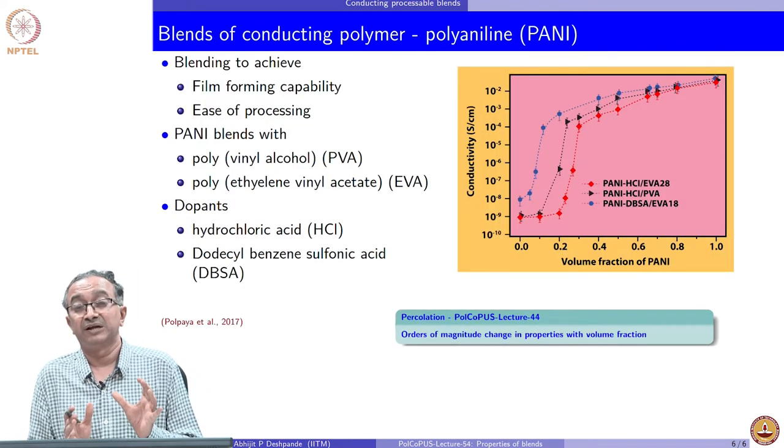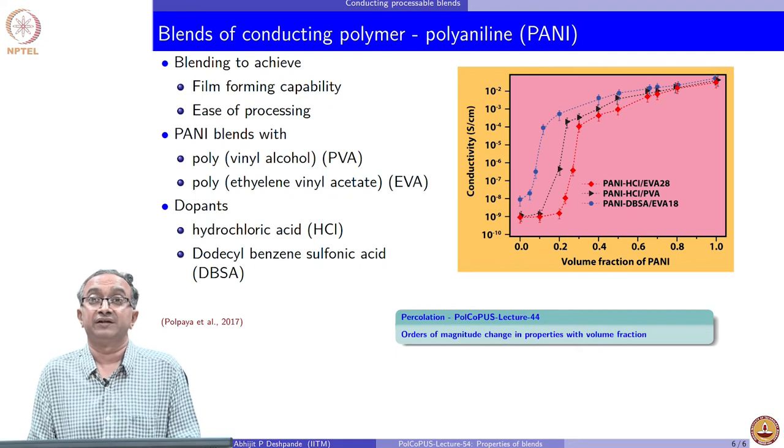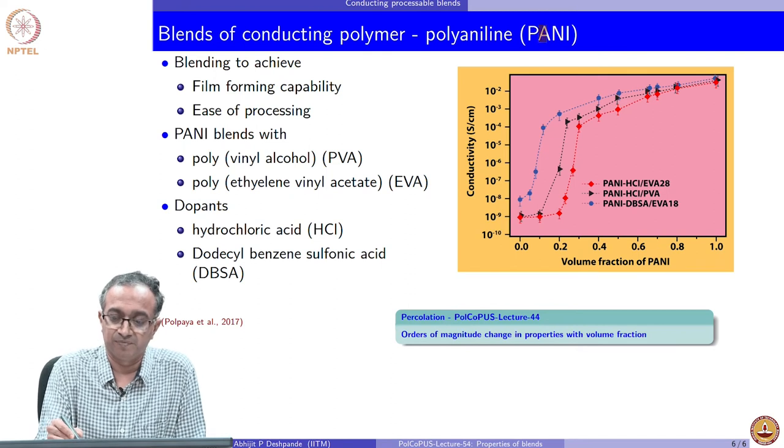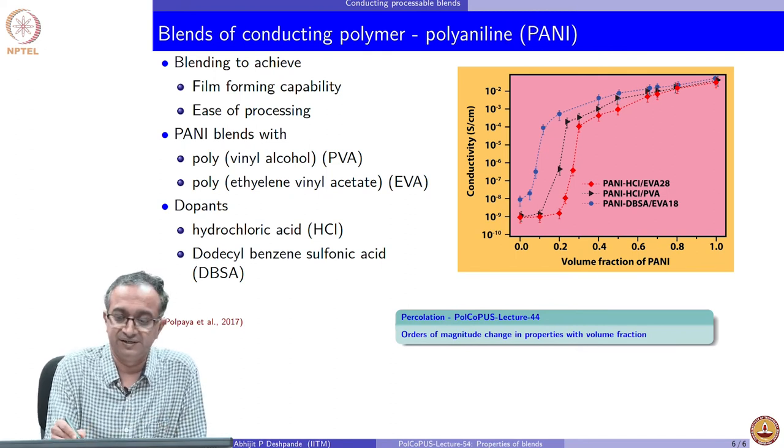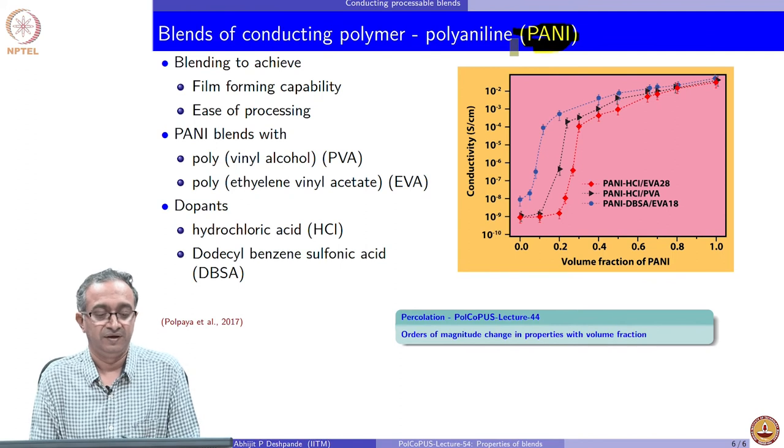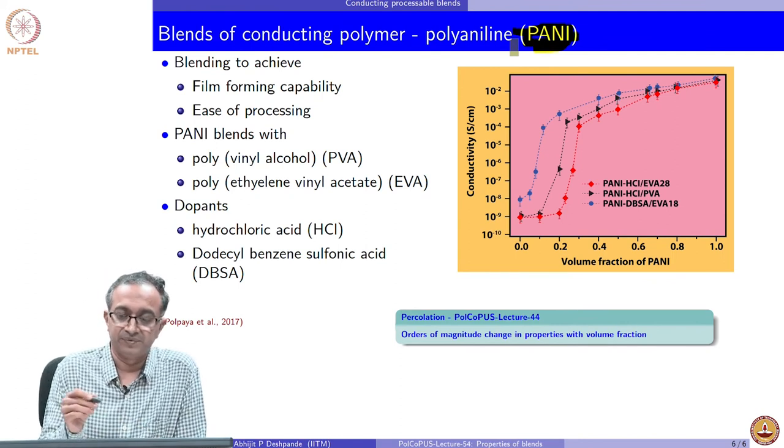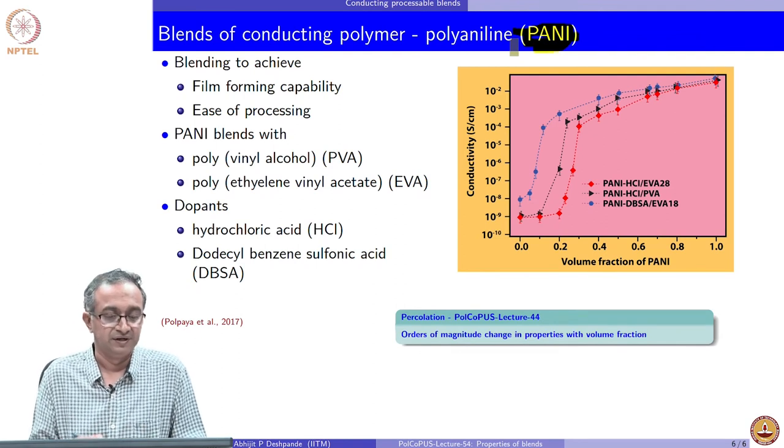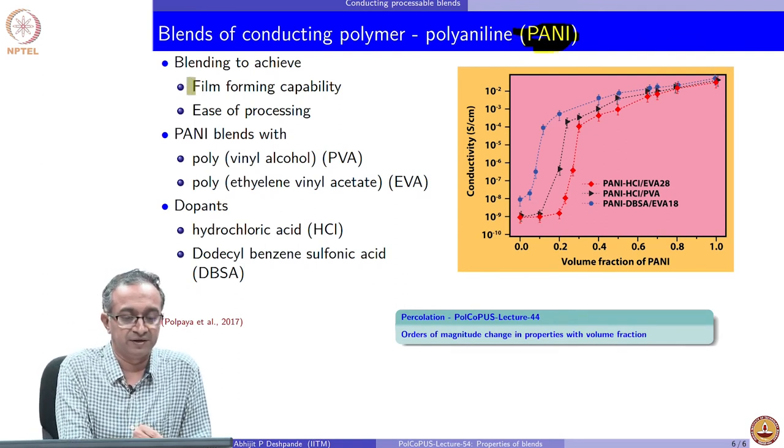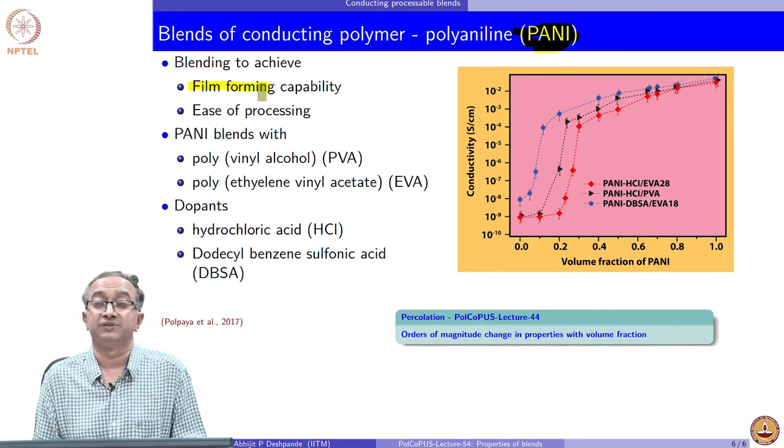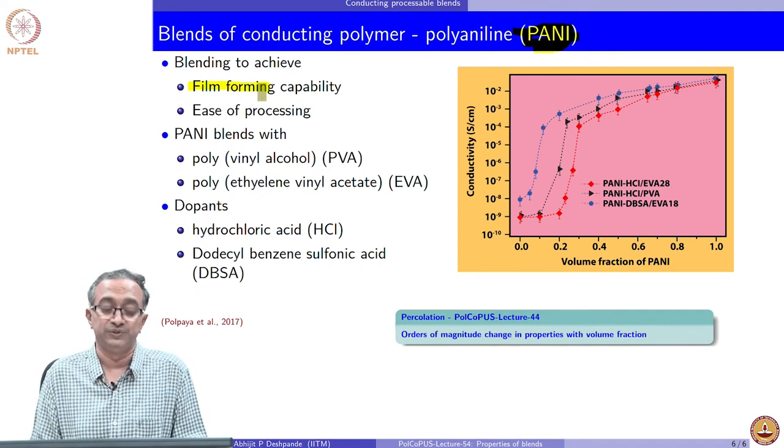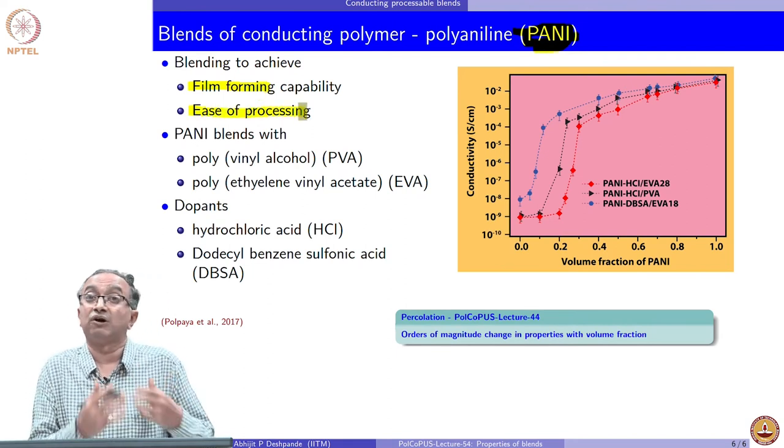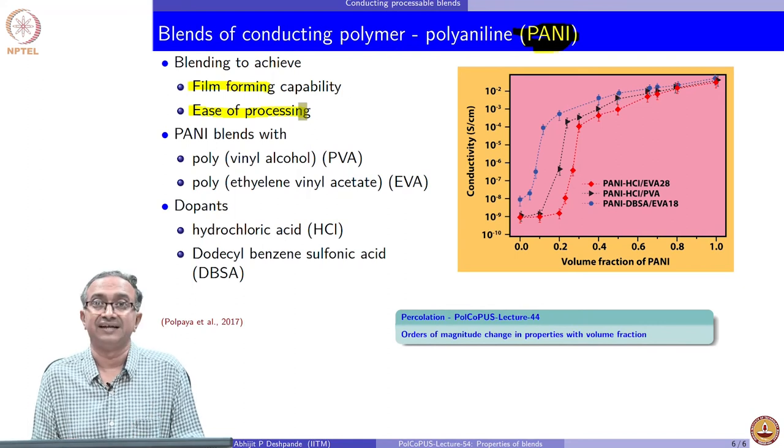We will finish this lecture by looking at another example of blend where the electrical conductivity is of interest. This is a blend of polyaniline which we have already seen as an example of conducting polymer. But this material is not very easy to handle, very easy to process. Film forming may not be very easy, you may form very brittle films, which are not easy to use. Also processing may be very difficult because solubility of PANI, which solvents is it soluble and things like that.